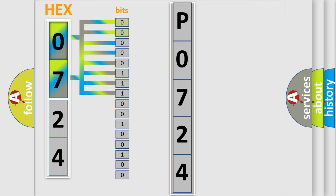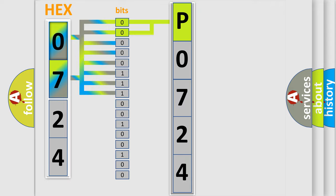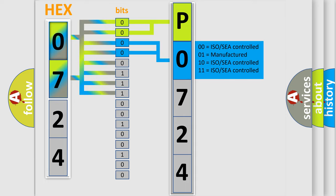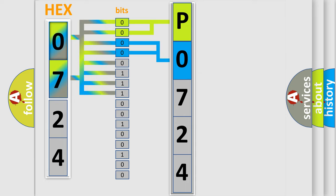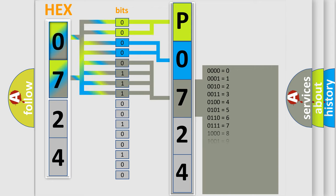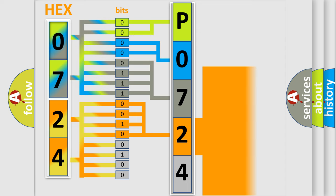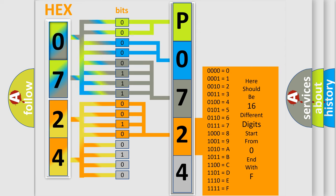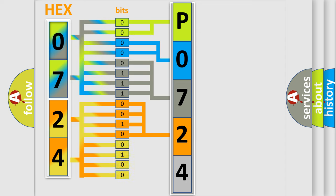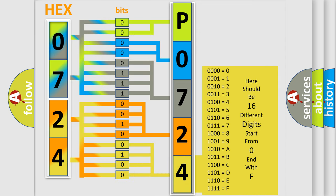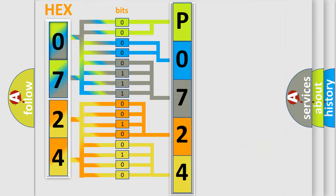Zero represents a low level, and one represents a high level. By combining the first two bits, the basic character of the error code is expressed. The next two bits determine the second character. The last bits of the first byte define the third character of the code. The second byte is composed of a combination of eight bits. The first four bits determine the fourth character of the code, and the combination of the last four bits defines the fifth character. A single byte conceals 256 possible combinations.